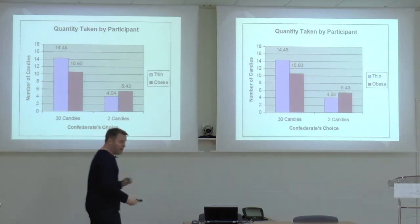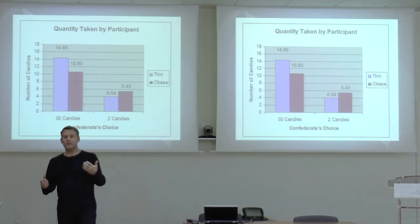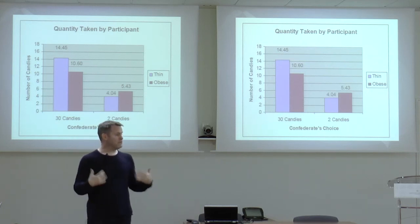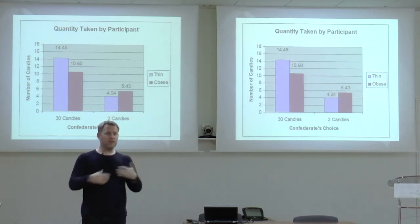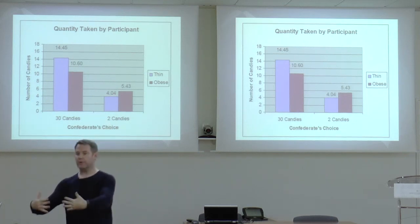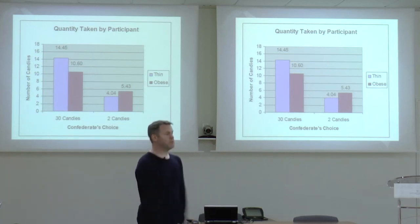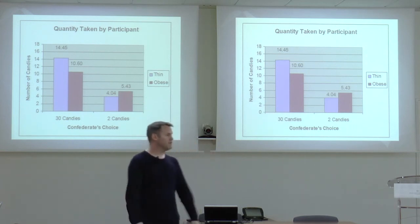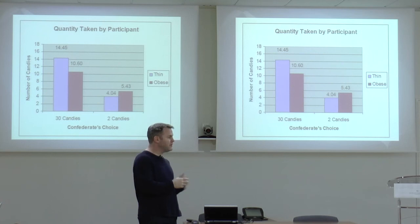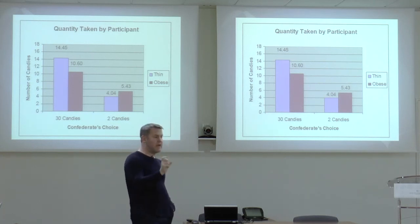The simplest theoretical frame is approach-avoidance. For the thin person, whatever they're doing you want to model subconsciously, because in North American society thinness is idolized. It becomes almost a licensing effect — that thin person is doing it, therefore I want to do it too. Whereas with an obese person, obesity is very much stigmatized in North American society, and you push away from whatever behaviors that heavy person is doing.